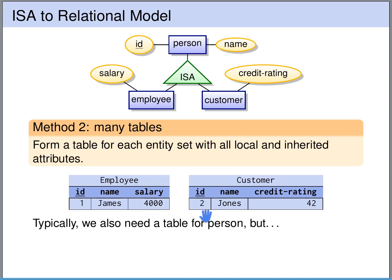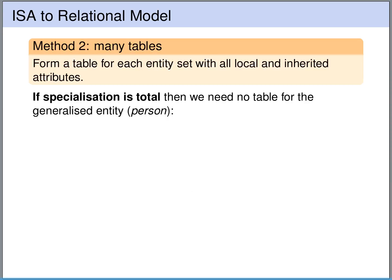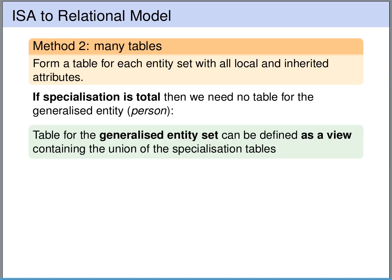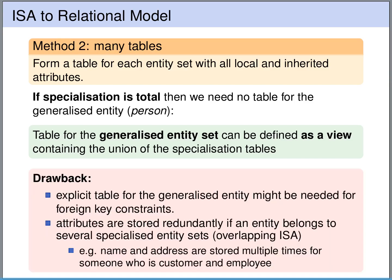Normally, we would also need an additional table for person — especially if we can have persons in our system that are neither employee nor customer, such an additional table would be needed. However, if the participation is total — so if every person is a customer or an employee — then we might not need the extra table. Then we can create the table for the generalized entity set person as a view that contains the union of the specialized tables customer and employee. However, this method has a drawback: we might need the explicit table person after all if we want to have foreign key constraints, so if we want other tables referring to any person, the view is not sufficient for such foreign key constraints.